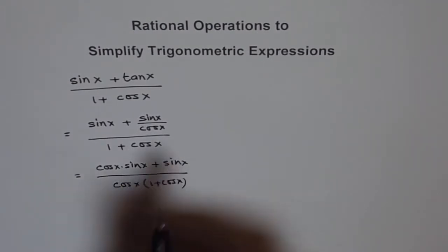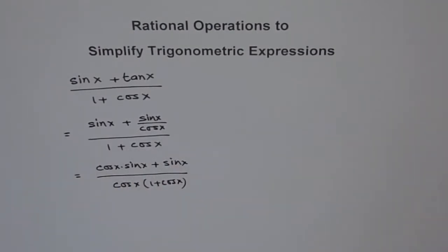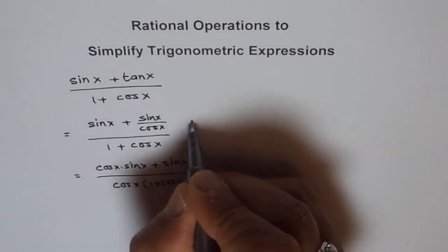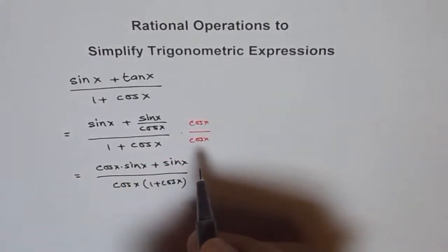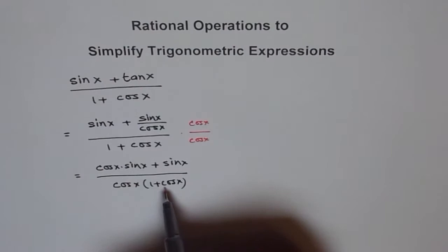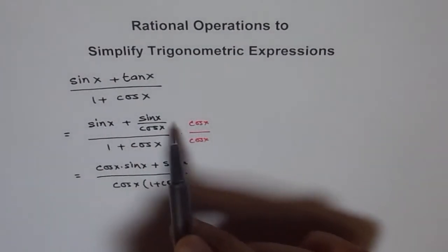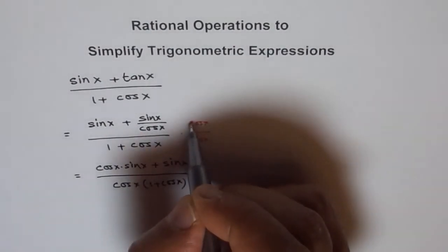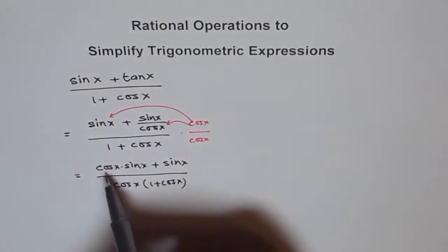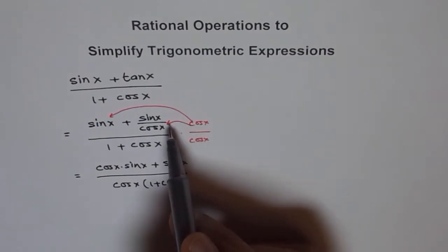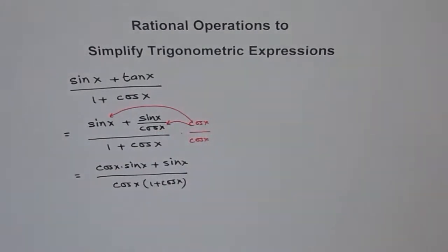So that's what we did here. Let me write it for you. We multiplied and divided by cos x. We get cos x times this in the denominator, and when you multiply cos x with both terms separately, one gives cos x sin x and the other cancels out to give sin x.